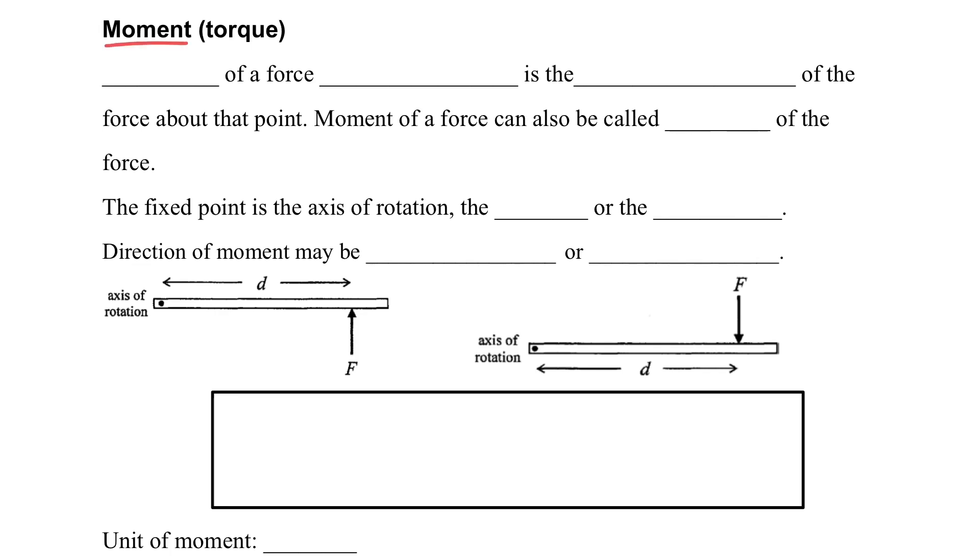Here is another variable called the moment. We use this moment to describe the turning force. So the moment about a point is the turning effect of the force about that point. In another name of moment, we call it torque sometimes, but actually it's the same thing.